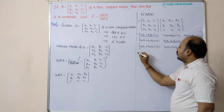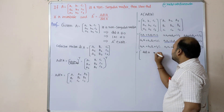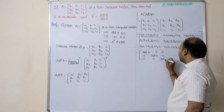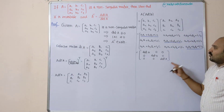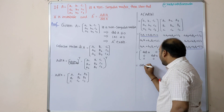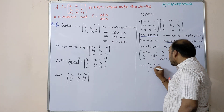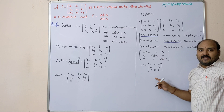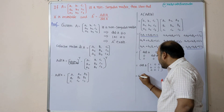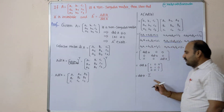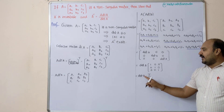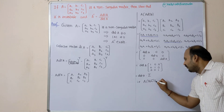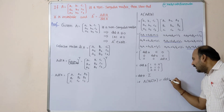So the result becomes the matrix [det A, 0, 0 / 0, det A, 0 / 0, 0, det A]. Taking det A as common, this becomes det A multiplied by [1, 0, 0 / 0, 1, 0 / 0, 0, 1], which is det A times the identity matrix I₃. So A × adjoint A equals det A × I.